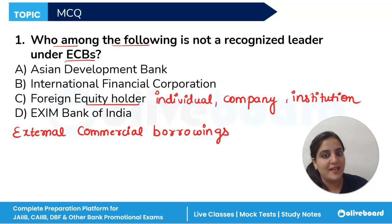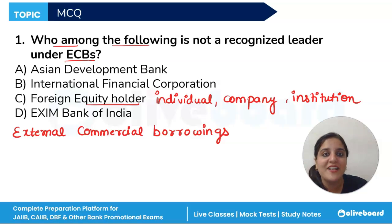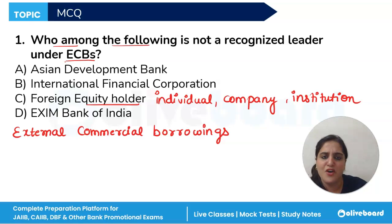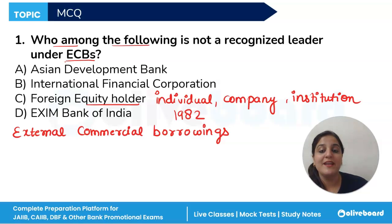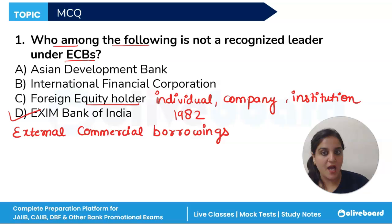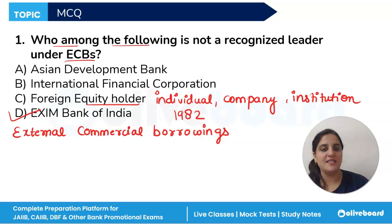Exim Bank of India — the Export-Import Bank of India — is a primary financial institution that provides financial assistance to Indian exporters and importers as well as foreign entities engaged in trade with India. It was established in 1982 under the Export-Import Bank of India Act with the objective of promoting India's international trade. The correct answer is Exim Bank of India, as it is not a recognized lender under ECBs.